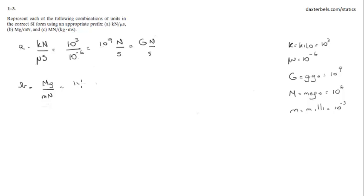So this would be 10 to the 6 over 10 to the negative 3, which is 6 minus, minus 3. Again, 10 to the 9 grams per newton or gigagrams per newton.